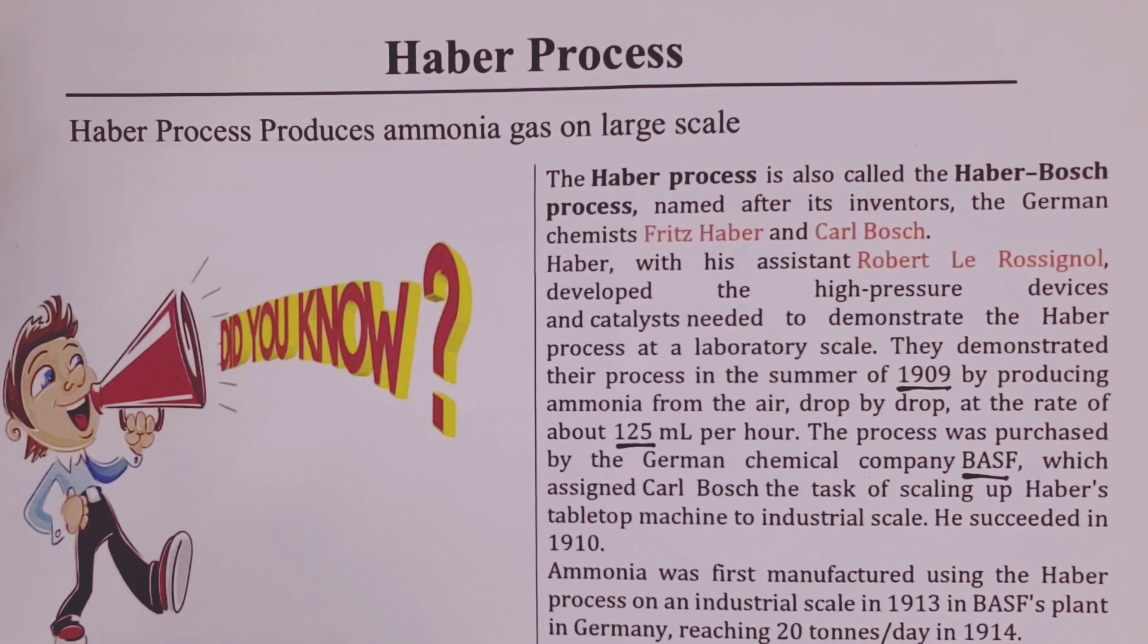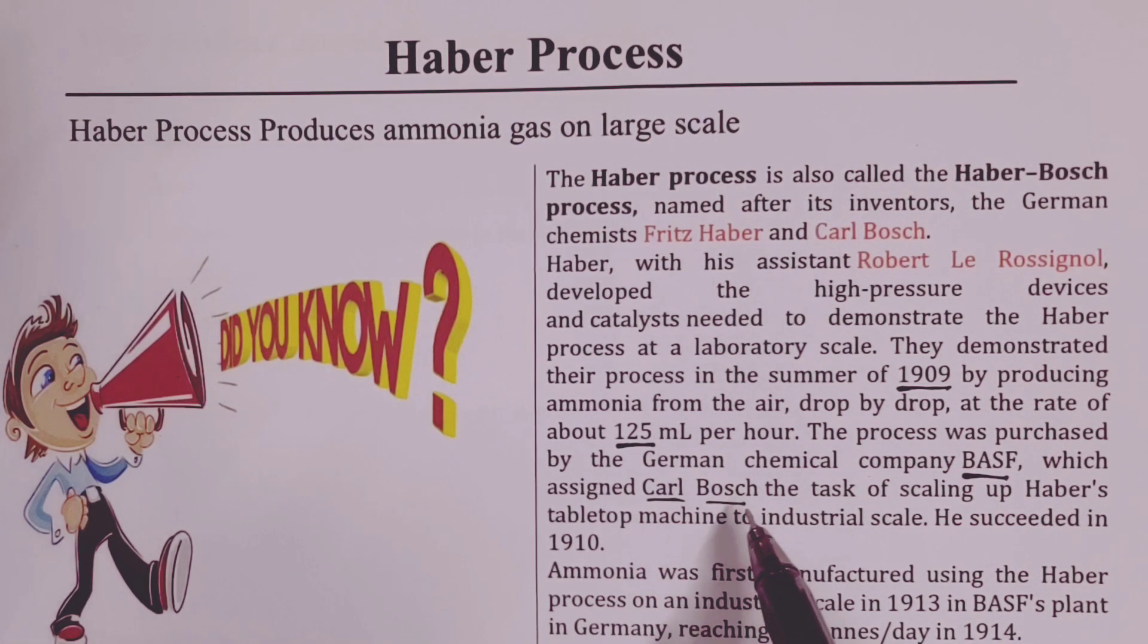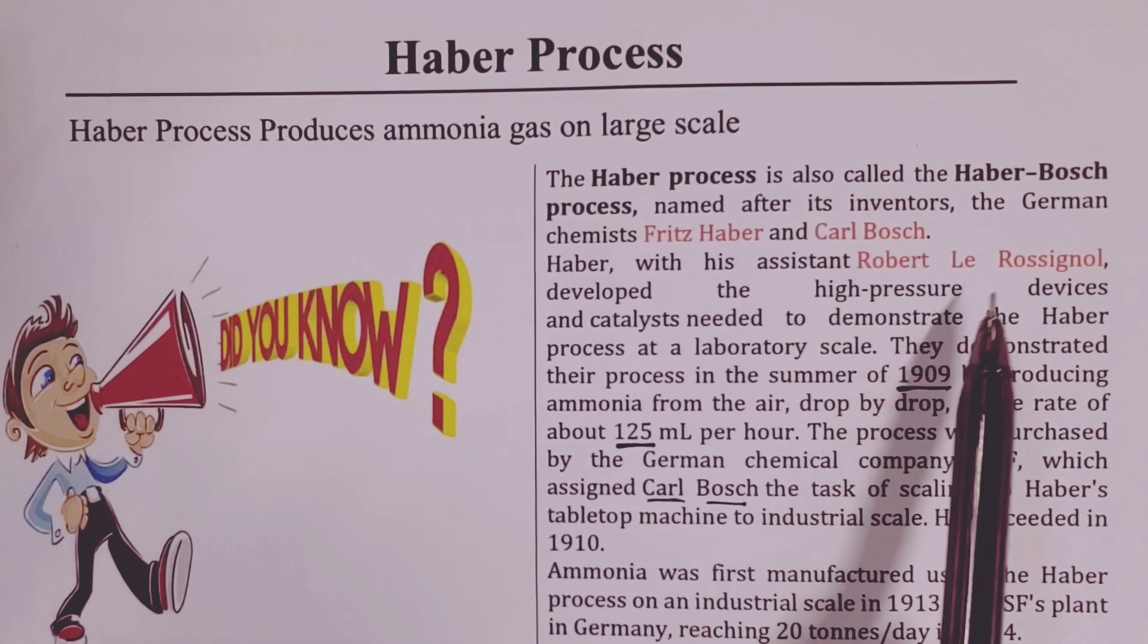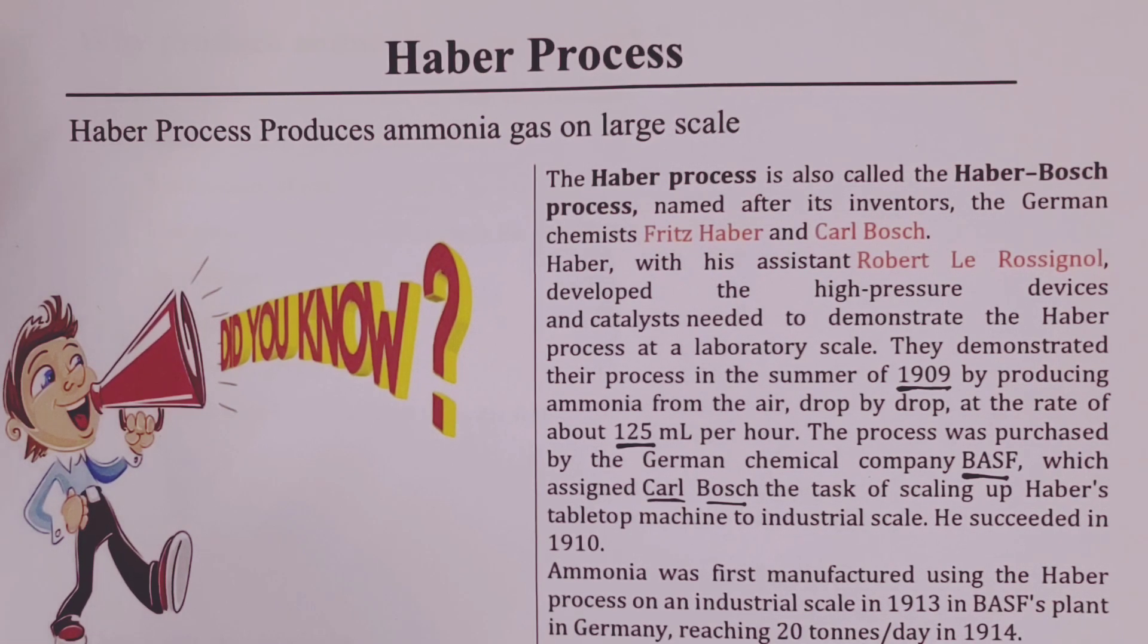As much as the process was very slow the German chemical company by the name BASF got interested in the process and purchased the idea from Haber. Now the chemical company then assigned Karl Bosch and that is why Bosch comes in in the name of the process. He was assigned the task of scaling up Haber's process to industrial scale and he was able to succeed just one year after and that was in the year 1910. So the chemical company was able to now produce 20 tons of the same per day.